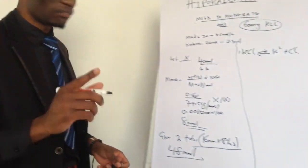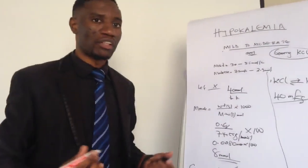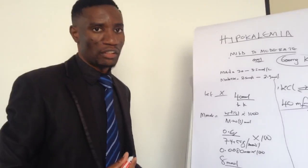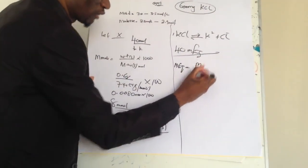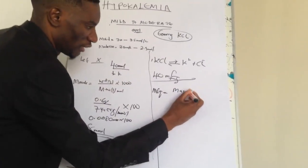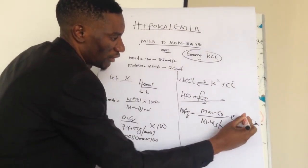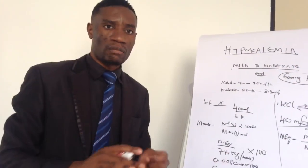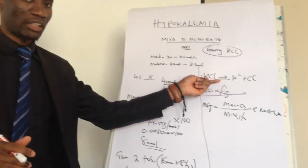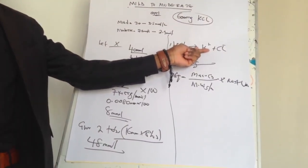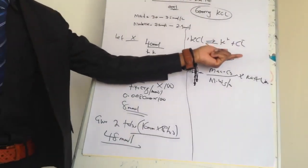Sometimes the doctor may write 40 milliequivalents of potassium instead of millimoles. The milliequivalents formula is: mEq = (mass in grams ÷ molecular weight in g/mol) × 1000 × valence. The valence is the combining power or charge of the element. When potassium chloride dissociates, potassium has a charge of 1+ and chloride has 1−, so the valence is 1.